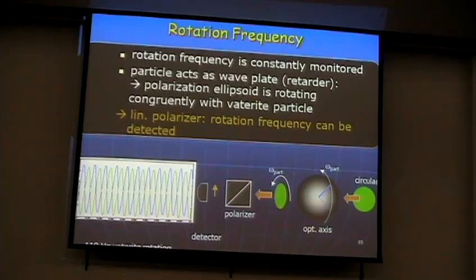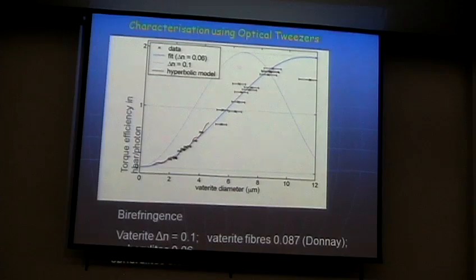So again, this is a real signal, and again it's very easy to do. The particle is rotating — simply a polarized particle — and I measure the signal. We can characterize whatever is happening in that.